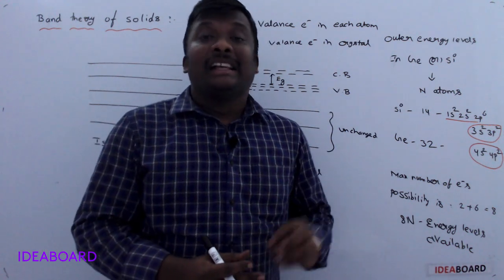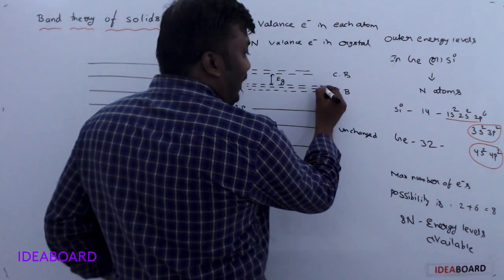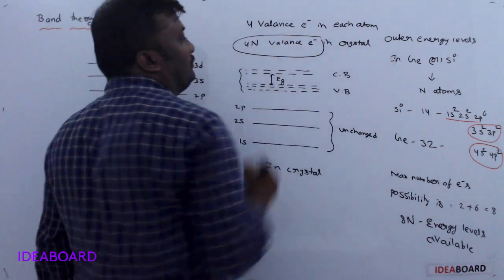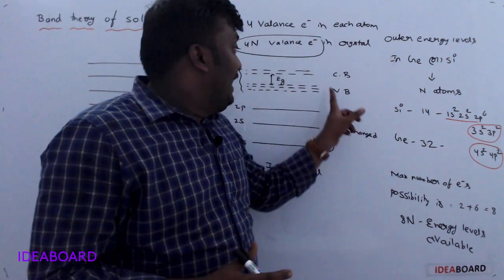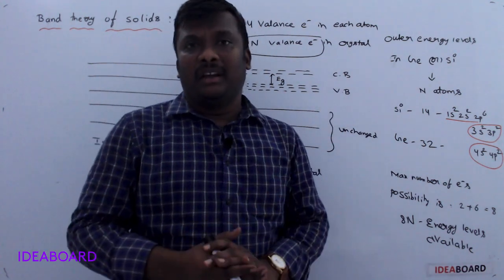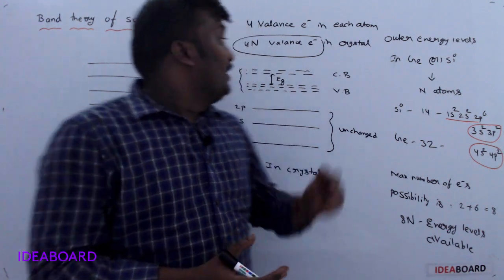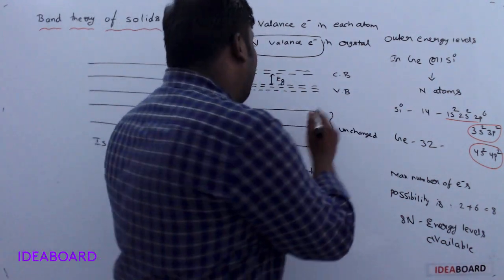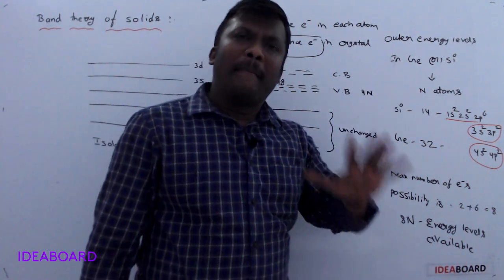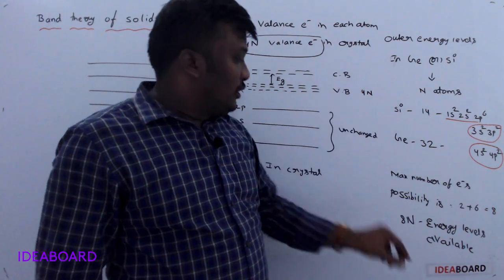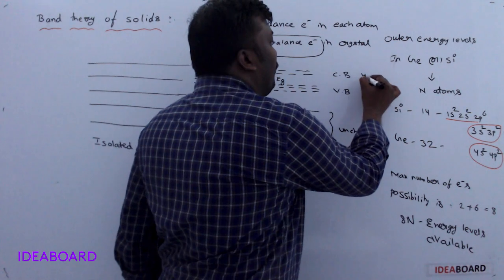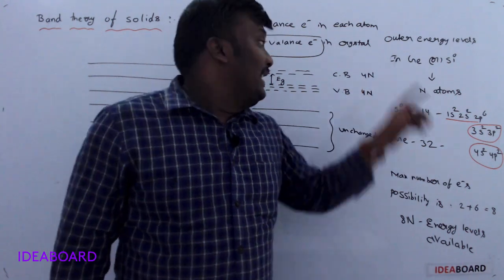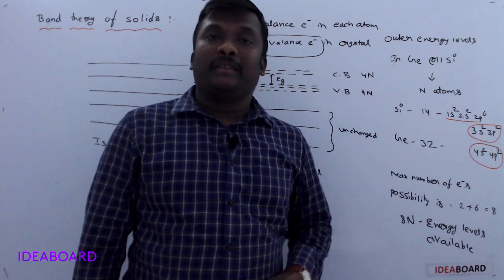It is very important to keep in mind: the number of energy levels in the valence band depends on the number of valence electrons. In germanium or silicon crystal, we have 4n valence electrons, so 4n energy states are available in the valence band. The remaining 4n states are present in the conduction band. The number of energy states completely depends on the interatomic distance between atoms in the crystal.